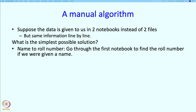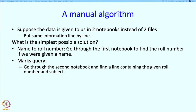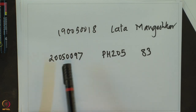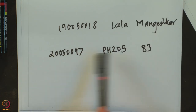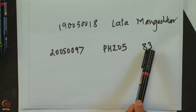What is the simplest possible solution? Well, suppose you want to translate from the name to the role number — we should go through the first notebook to find the role number if we were given the name. And then if we are given the marks query, that is m followed by role number or name followed by the subject code, well we have to go through the second notebook, which contains lines of this form, and we should look for the role number and the subject being present in the same line, and then we should just report the marks.